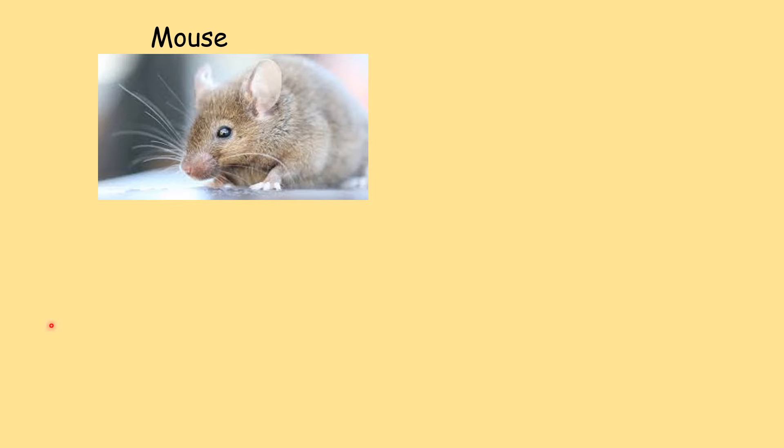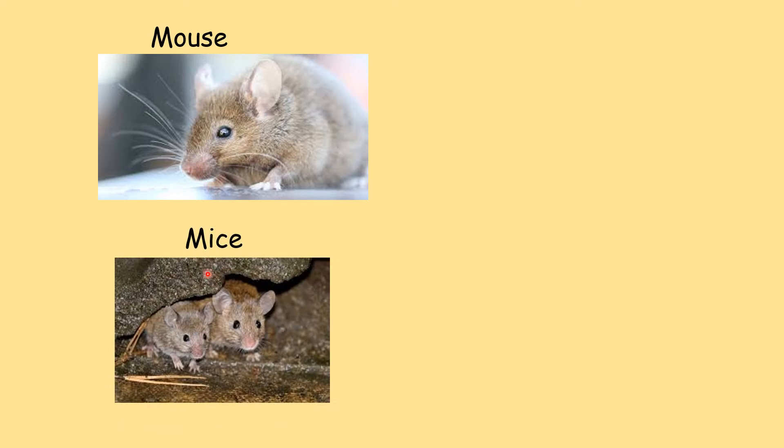Children, we have learnt about singular and plural — one and many. Now when we talk about this animal, it is known as a mouse — one mouse. And more than one mouse becomes mice.